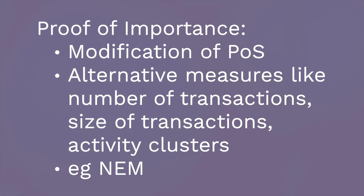Proof of Importance adds things like: number of transactions, size of transactions, and activity clusters. The number of transactions a node has executed, the size of the transactions the node has executed, and the number of transactions it has done with peer nodes — that is known as an activity cluster. These measures are taken into consideration to decide which node will be chosen to add a block into the chain. If a node has participated in a larger number of transactions, the size of the transaction is more, and it has communicated with a larger number of peer nodes, these measures give that node the ability to become a valid node to create a block in the chain.